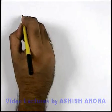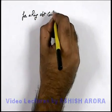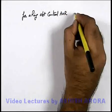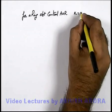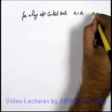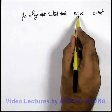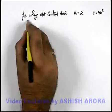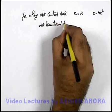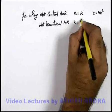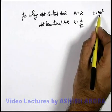For example, if we talk about a ring about its central axis of rotation, the radius of gyration can be written as √(I/m), which equals r, because the moment of inertia is mr². Similarly, for the ring about its diametrical axis of rotation, k = r/√2, because in this situation the moment of inertia we get is mr²/2.